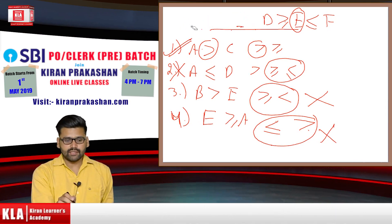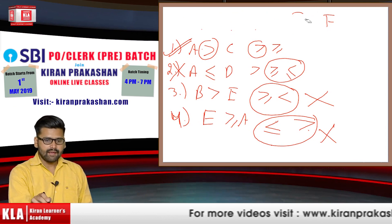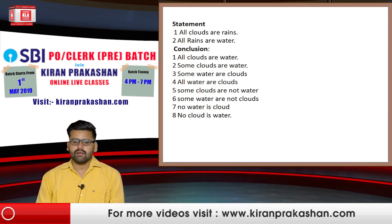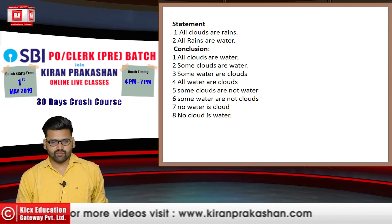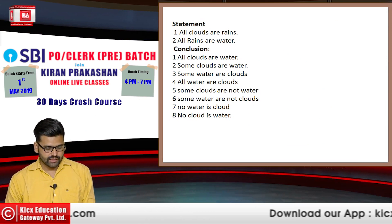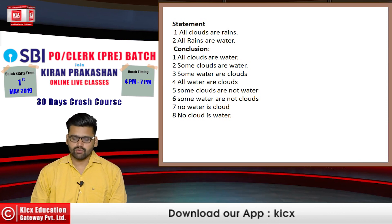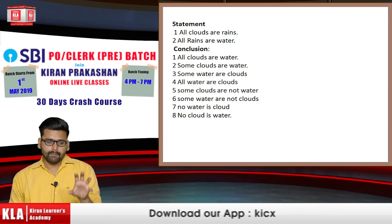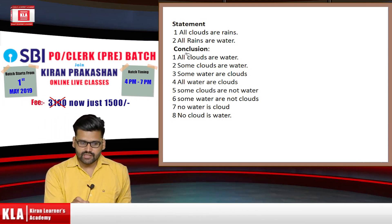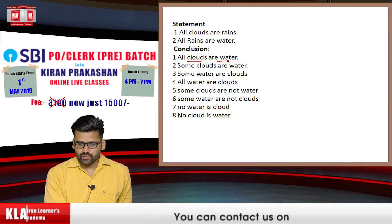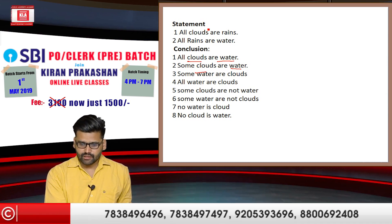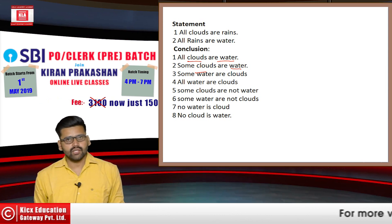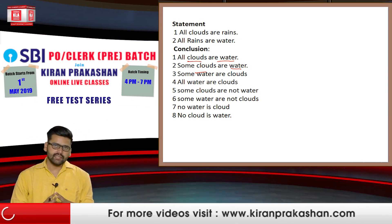Now let's move to the second chapter: syllogism. Here is your syllogism question. Statements given: All clouds are rains; All rains are water. Conclusions given: (1) All clouds are water, (2) Some clouds are water, (3) Some water are clouds, (4) All water are clouds, (5) Some clouds are not water. You can see that all conclusions are between cloud and water. Syllogism has many different ways to approach it.